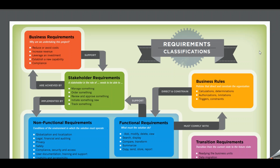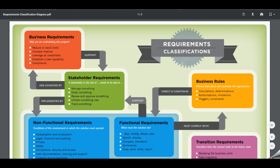Business requirements are typically high-level business goals and objectives. An example would be: we would like to automate our vendor management system so that we can streamline end-to-end processes so that vendor lead time is reduced by 50% in the next 12 months.